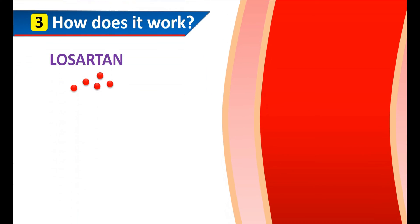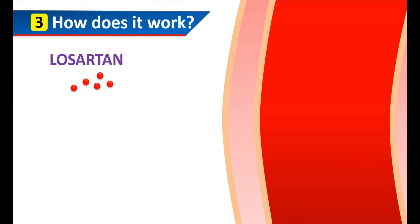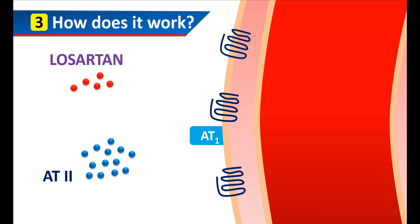The action of angiotensin 2 on the blood vessels is more important. On the blood vessels, AT1 receptors are located. These are G-protein coupled receptors.